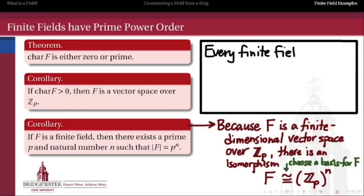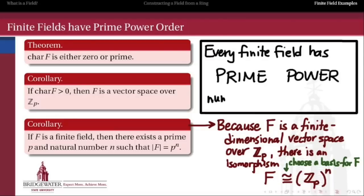The big takeaway is that every finite field has a prime power number of elements. This includes the modular groups Z mod p, but also other fields that are not Z mod p yet still have p^n elements. In our last example with F4, that was the prime power 2 squared. Additively it was the Klein 4 group, but multiplicatively it had a more interesting structure.